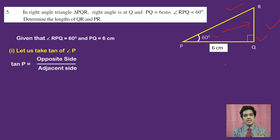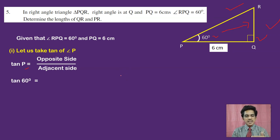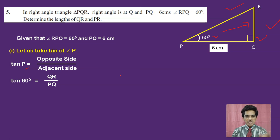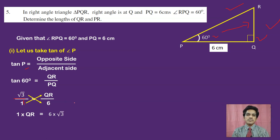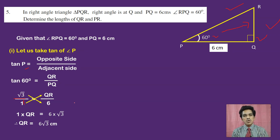Tan P equals opposite side by adjacent side, so tan 60 equals QR by PQ. From the table, tan 60 = root 3. So root 3 = QR by 6. By cross multiplication: QR = 6 root 3 cm. So we have found the opposite side using tan.